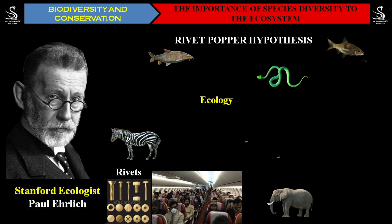This is what Paul Ehrlich has explained so beautifully through the Rivet Popper Hypothesis — that every species on the planet plays a very important role in sustaining the entire Earth. If more and more species continue to go extinct, it will one hundred percent lead to the destruction of this entire planet. That is why it is our responsibility to protect the entire ecosystem with all its species.